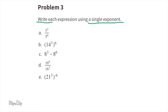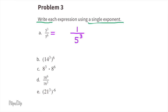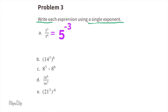Problem number three: Write each expression using a single exponent. Expression a: five to the power of three over five to the power of six. Five to the power of three is five times five times five, and five to the power of six is five times itself six times. Dividing, the three fives in the numerator each cancel with a five in the denominator, leaving one over five times five times five. That's equivalent to one over five to the power of three, which using a single exponent we can write as five to the power of negative three.